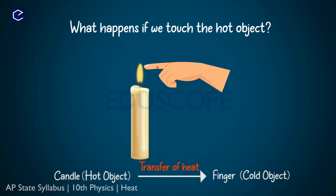Now touch a flame — how do you feel? We feel hot. When we touch a flame, heat energy transfers to our finger. We know that heat energy always flows from a higher temperature to a lower temperature — from a hot object to a cold object. Whenever we gain heat energy, we feel hot.